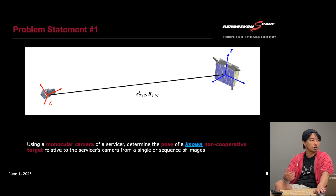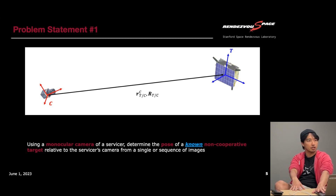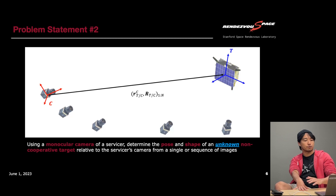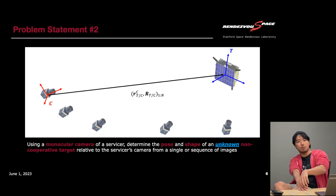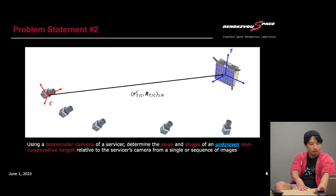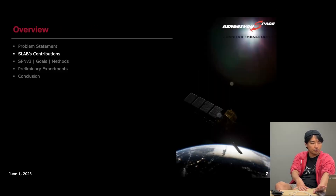So far we've focused mainly on known targets, assuming we have a 3D model of the target available a priori, which makes sense for certain mission types like servicing or specific clients. We've also started expanding to unknown targets — using a sequence of images to recover the pose associated with each image, and also reconstructing the 3D model and properties of the target, including not only its shape but also potentially its principal moment of inertia to characterize rotational motion.